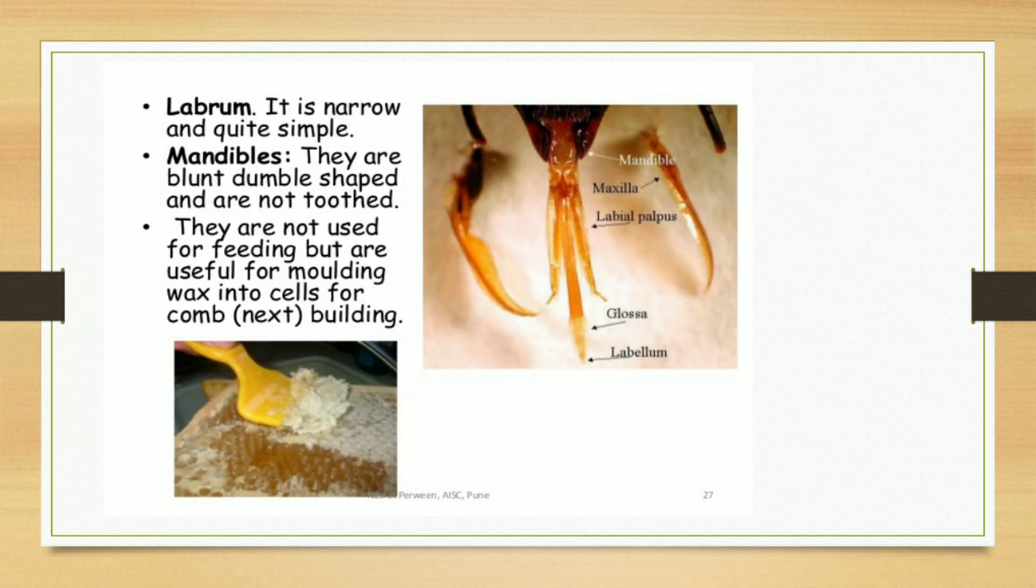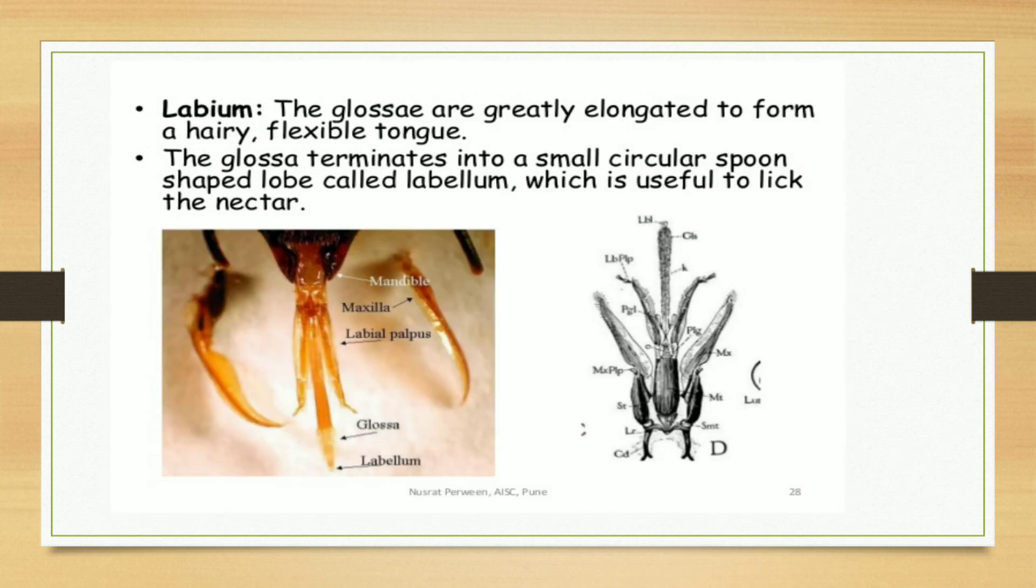Labrum is narrow and quite simple. Mandibles are blunt, dumbbell-shaped, and are not toothed. They are not used for feeding but are useful for molding wax into cells for comb-building. Then labium. The glossae are greatly elongated to form a hairy, flexible tongue. The glossa terminates into a small circular spoon-shaped lobe called labellum, which is useful to lick the nectar.